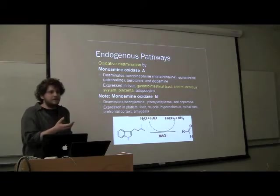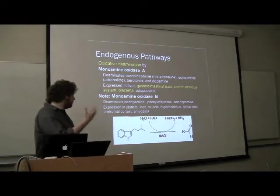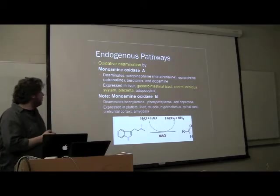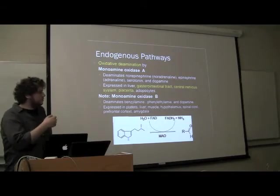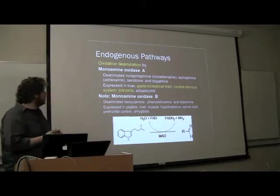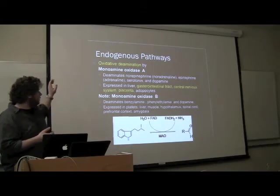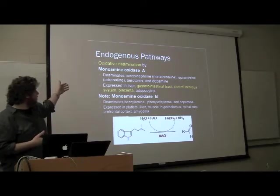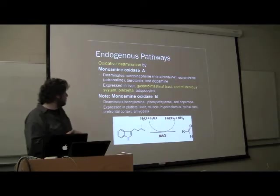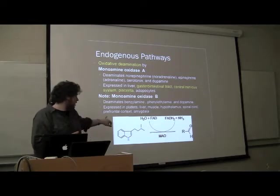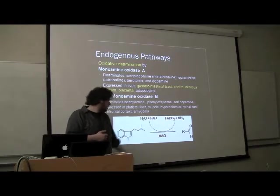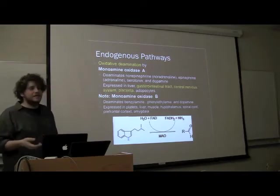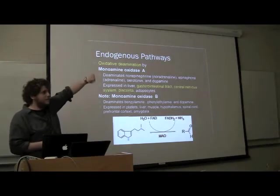So once we have this in our bodies, how do we get rid of it? Because if it accumulates, it'll just keep acting on us. One thing about the short-lived experience of the smokeable version of DMT is that we have systems to quickly get rid of it. It's oxidized by monoamine oxidase A, which cleaves off the amine group and replaces it with an aldehyde group, making it inactive as a neurotransmitter.